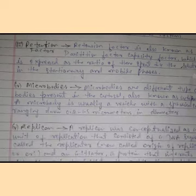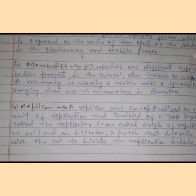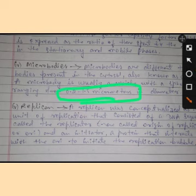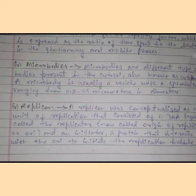Next, we can talk about microbodies. Microbodies are many types of bodies present in cytosomes, also called cytosomes. A microbody is usually a vesicle which is spherical in shape, ranging from 0.2 to 1.5 micrometers in diameter.